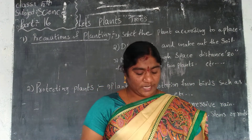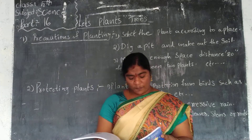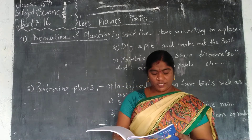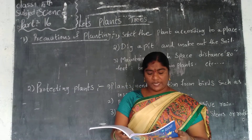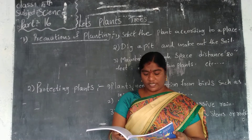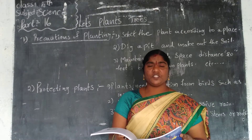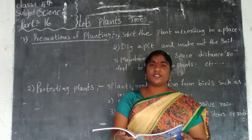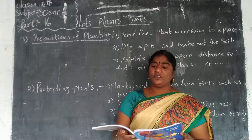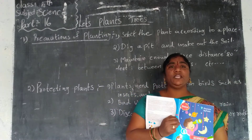The given steps should be followed while planting a tree. First, select an appropriate plant according to the place. Make sure that the plant receives sufficient air and sunlight when you are planting a tree.